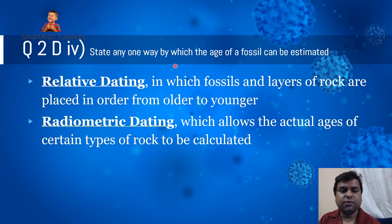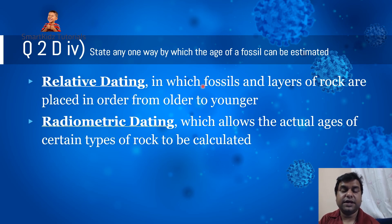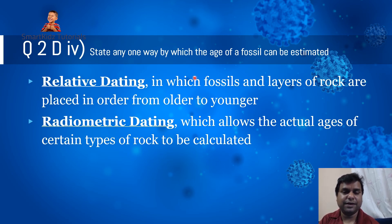Question 2D4: state any one way by which the age of a fossil can be estimated. Two methods are mentioned in the textbook. First, relative dating, in which fossils and layers of rock are placed in order from older to younger. Second, radiometric dating, which allows the actual ages of certain types of rock to be calculated. You can mention either one.